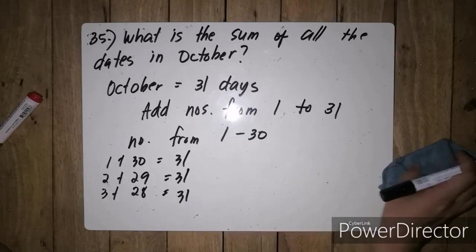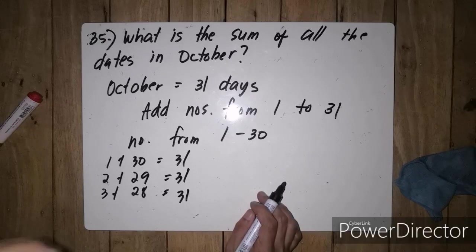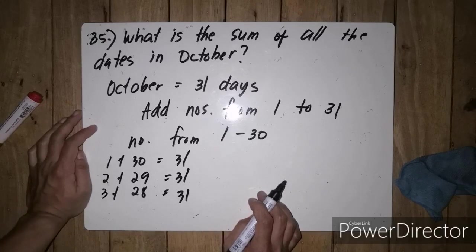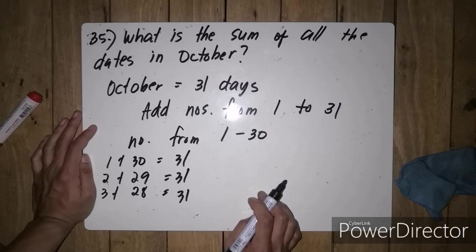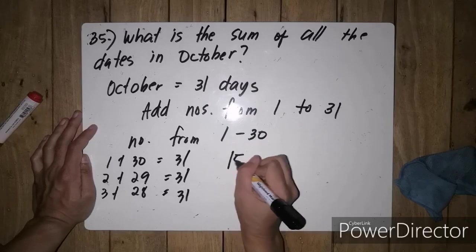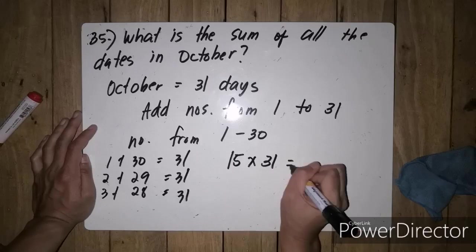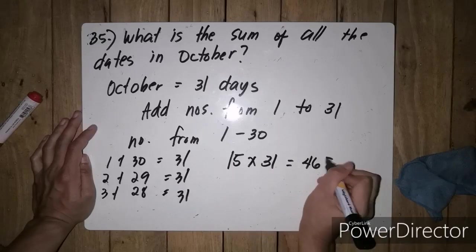So ilang 31 ang mabubuo natin out of 30 pairings or ilang pairs ang mabubuo. So we have 15 pairs. So 15 times 31 mo lang yun is equal to 465.